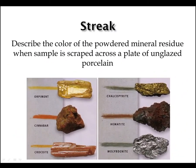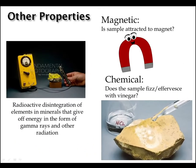A mineral streak refers to the color of the powdered mineral residue when a sample is scraped across a plate of unglazed porcelain. Unlike the color of a mineral, the color of the streak is relatively consistent. If a mineral has no streak, it is noted as white or colorless. The streak test is also very important when identifying minerals. Other mineral properties that can be tested include radioactivity, magnetism, and reaction with acid. Testing whether the mineral is attracted to a magnet, and if the mineral reacts with acid when it is put onto its surface, are two tests that should always, always be performed. Many people get hung up when trying to identify a mineral by not completing these two quick and simple tests.